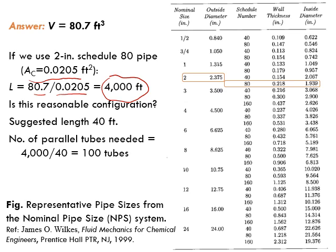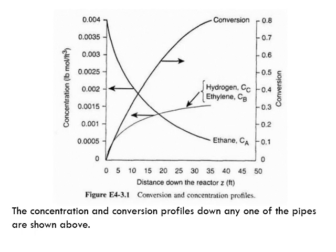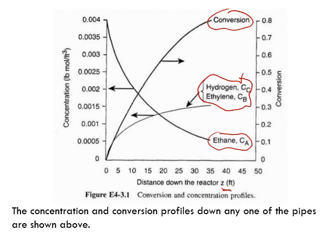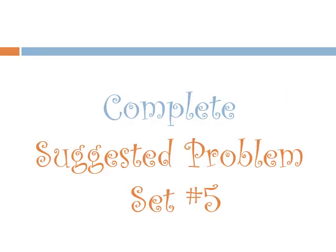We can also plot concentration and conversion profiles. The conversion versus distance down the reactor length can be plotted, along with the concentration of ethane, which decreases as it is the reactant. The concentrations of the products, ethylene and hydrogen, increase along the reactor length. With this, we finish today's lecture. Make sure you complete the suggested problem set number five. See you soon.